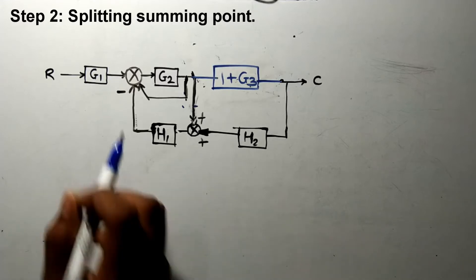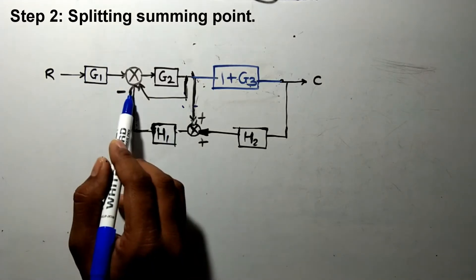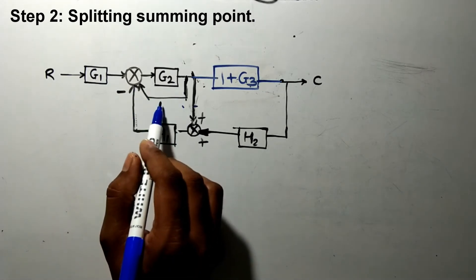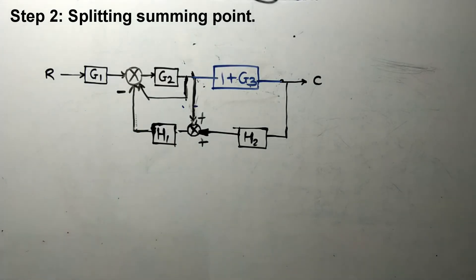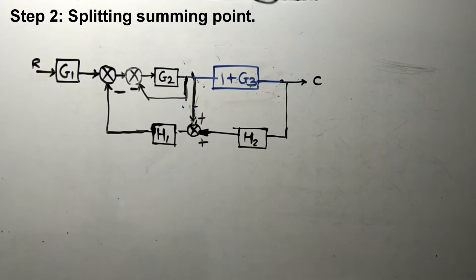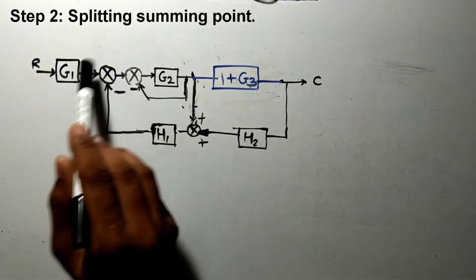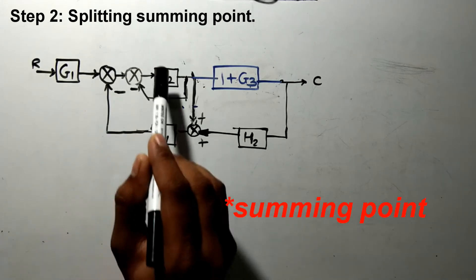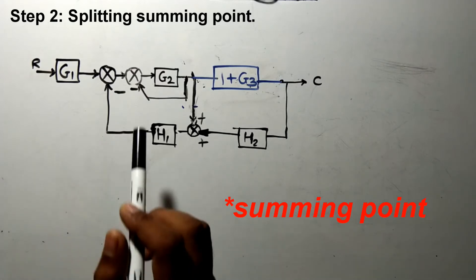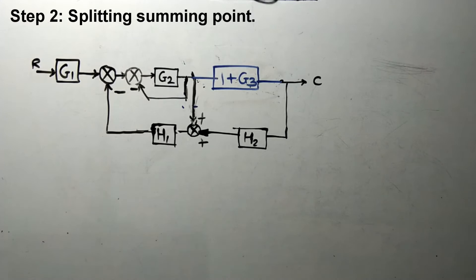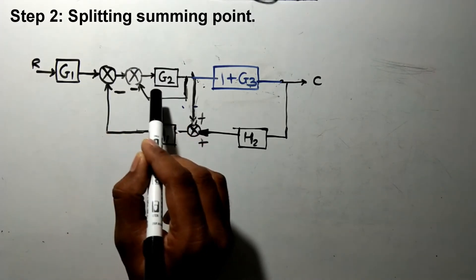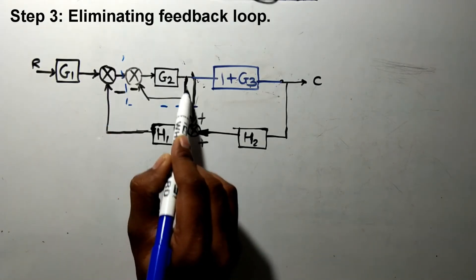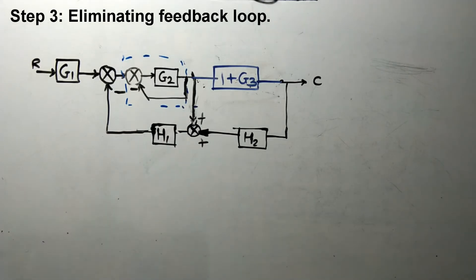Step number 2 is to split this summing point. This summing point has two different feedback connections — one is H1 and one is G2. Therefore the modified diagram will be this one. We have converted this single block into two blocks, and now you can see clearly that G2 and this feedback loop form a closed loop. Therefore our next step is to eliminate this feedback loop.